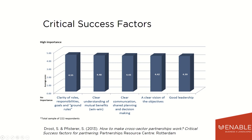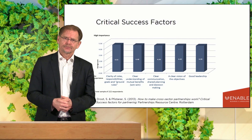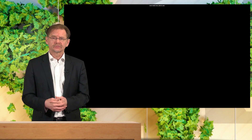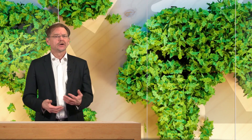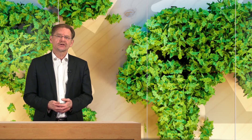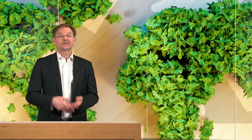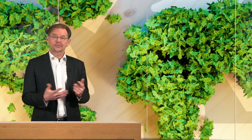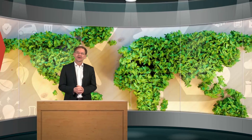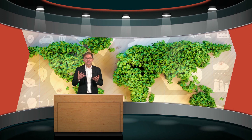In a study by the Partnerships Resource Centre, 222 people working in cross-sector partnerships worldwide were asked about critical success factors. Five factors emerged: clarity of roles, responsibilities, goals, and ground rules; a clear understanding of mutual benefits; clear communication, shared planning, and decision-making; a clear vision of the objective; and good leadership. We have talked about how cross-sector partnerships can be defined, the different forms they can take, and key challenges and how to deal with them. If you are looking for more reading material, we have listed some on the website of the Partnership Resource Centre. Thanks for your time — in the next video, I will talk about how you can design a good partnership.